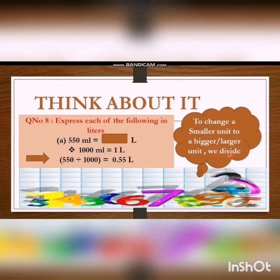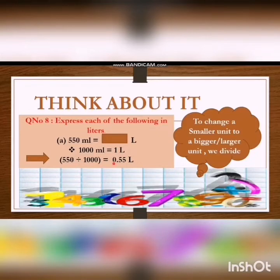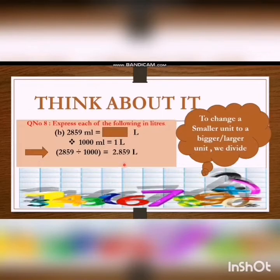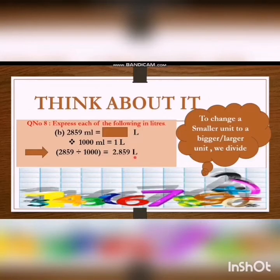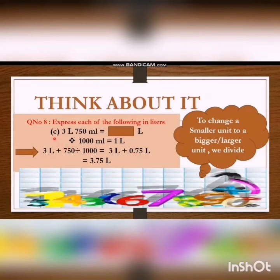Question number 8: Express each of the following in liters. Part A: 550 ml. We convert it into liters. When we convert smaller value to greater value, we divide by 1000. So when we divide 550 by 1000, we get 0.55 liters. Part B: 2,859 ml. We divide by 1000 and we get 2.859 liters.